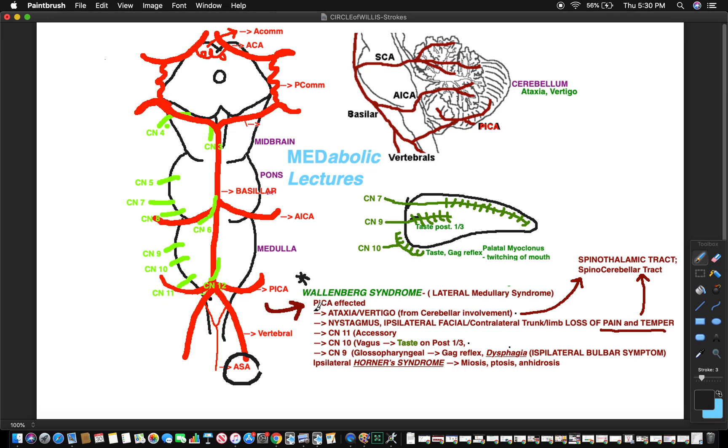We are talking about the posterior inferior cerebellar artery, PICA. PICA's affected. PICA involves these three nerves - it's the base of the medulla and goes all the way to the back where you have the cerebellum.